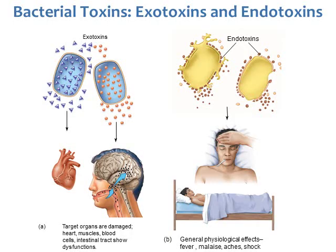Some toxins are called exotoxins — these are released out of the bacteria cells and target organs such as the heart, muscles, blood cells, and the intestinal tract, and can travel throughout the body. Endotoxins, on the other hand, are found inside the cell or are part of the cell wall. They aren't released and can't travel to other parts of the body; they cause the person to feel sick with symptoms like fever, tiredness, aches and pains, and can lead to shock.